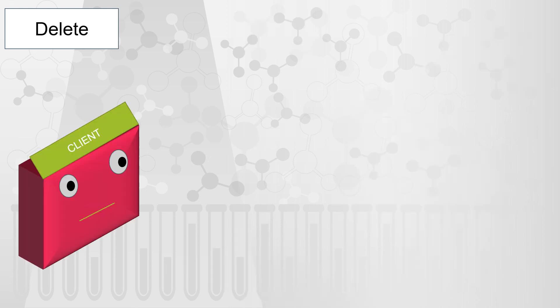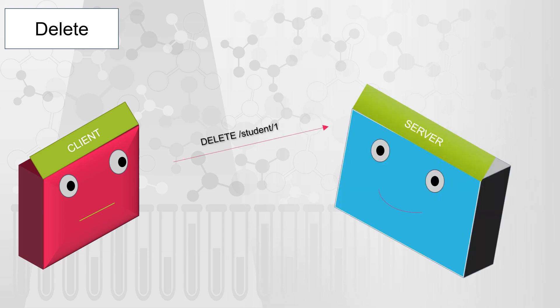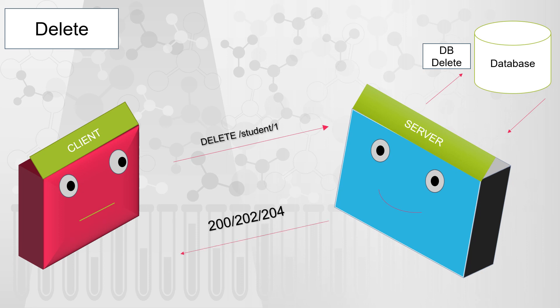The last HTTP method is DELETE. As the name suggests, it is used to delete a resource from the server. The client initiates the DELETE call and the server removes the record from its backend database, then sends back 200, 202 (request accepted), or 204 (no content found), depending on the situation. DELETE is idempotent because irrespective of how many times you try to delete a resource you get the same kind of response. It is not safe because we are deleting the resource from the server.